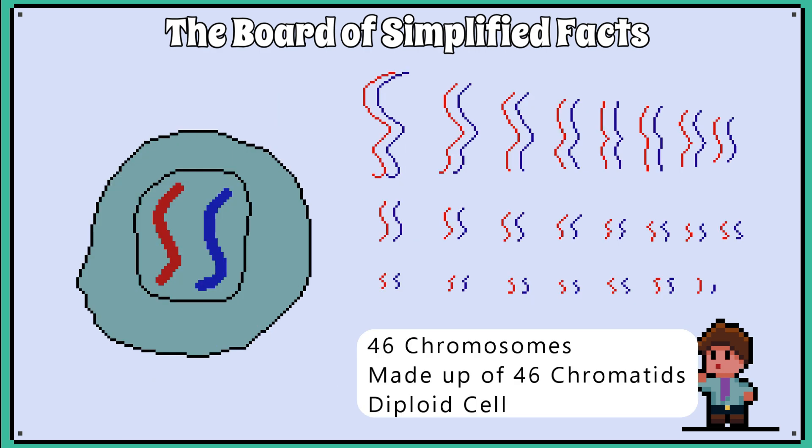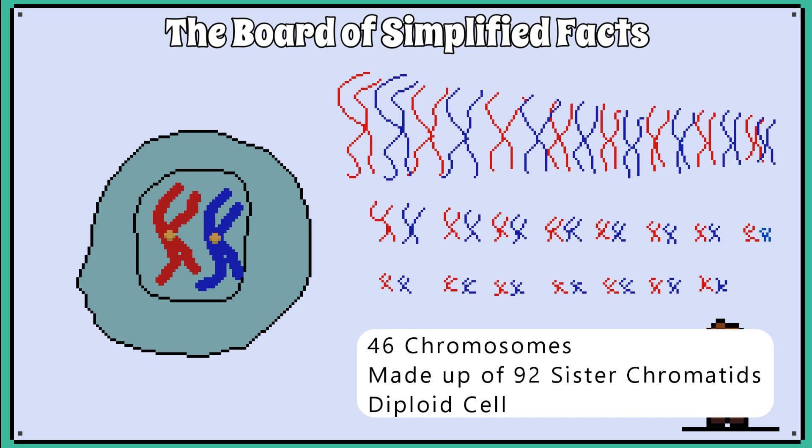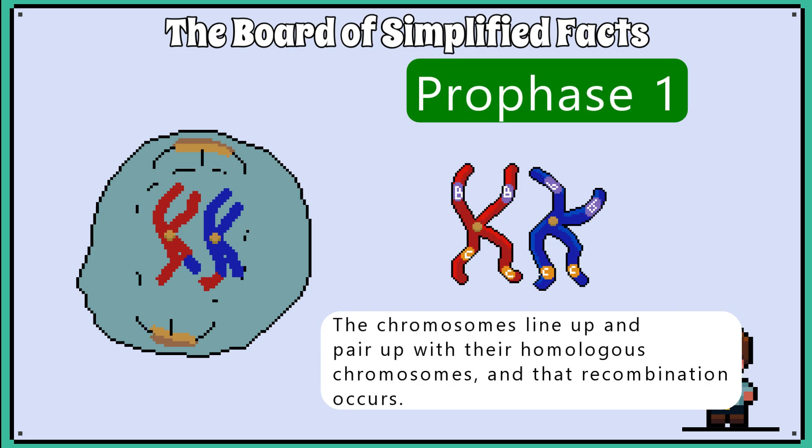First, the mother cell with 46 chromosomes — called a diploid cell, as it contains paired chromosomes from both its mother and father — doubles its DNA, so that each chromosome is now made up of two sister chromatids, as we saw in mitosis during interphase. The first major difference, however, is that during prophase 1 in meiosis, the chromosomes line up and pair up with their homologous chromosomes, and recombination occurs.